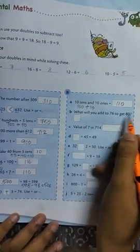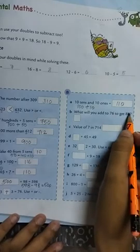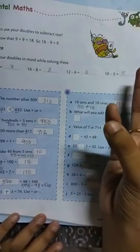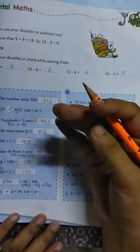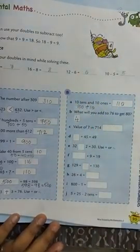What will you add to 76 to get 80? 76, 77, 78, 79, 80. 4. We will add 4.